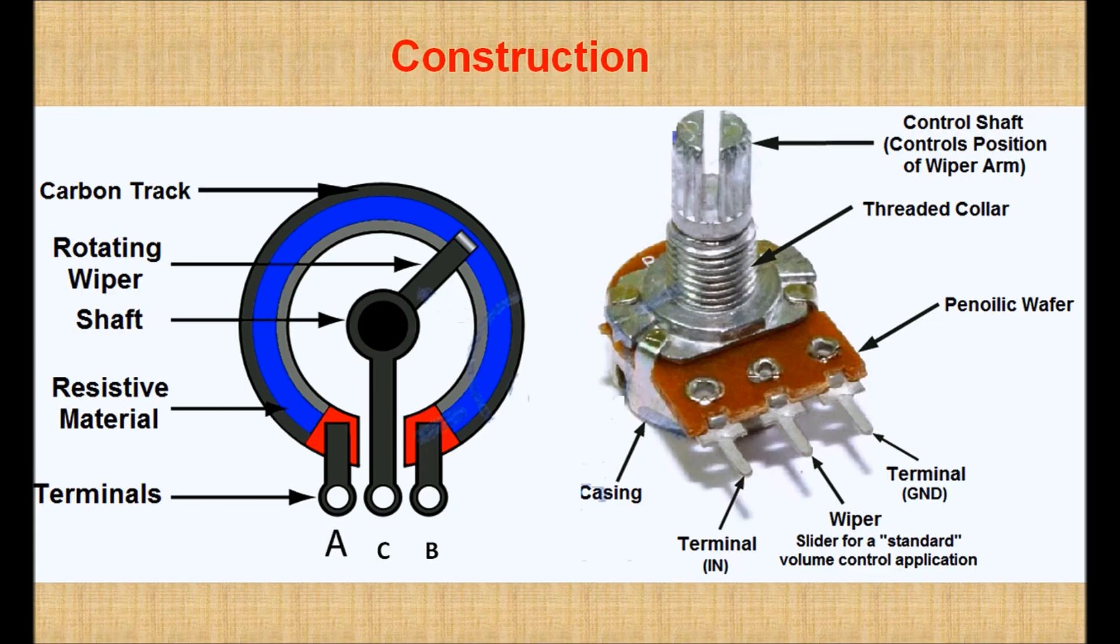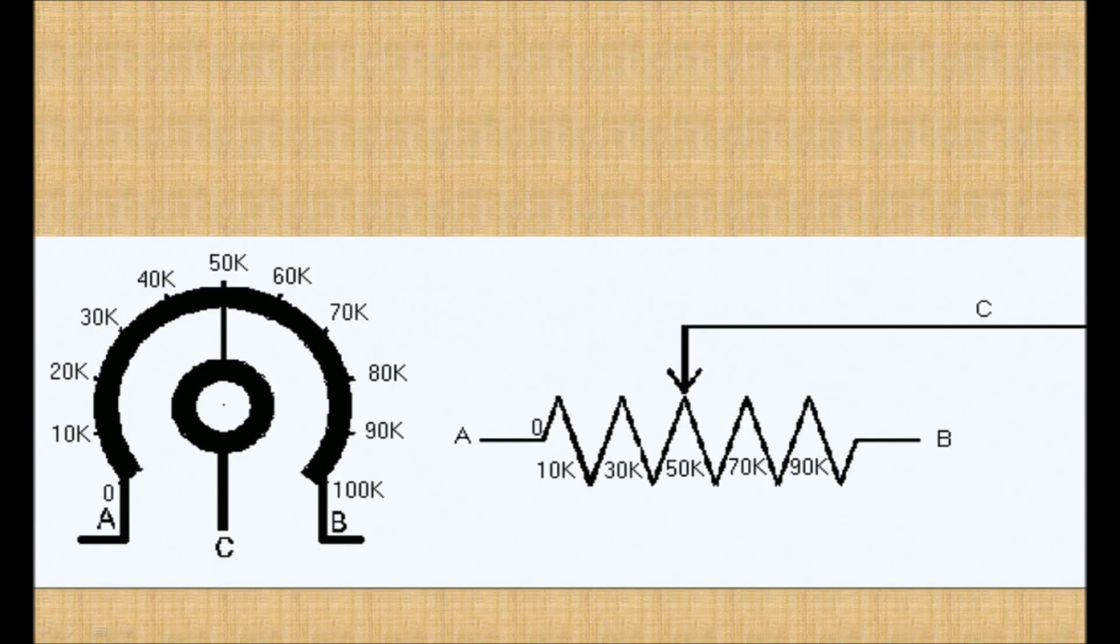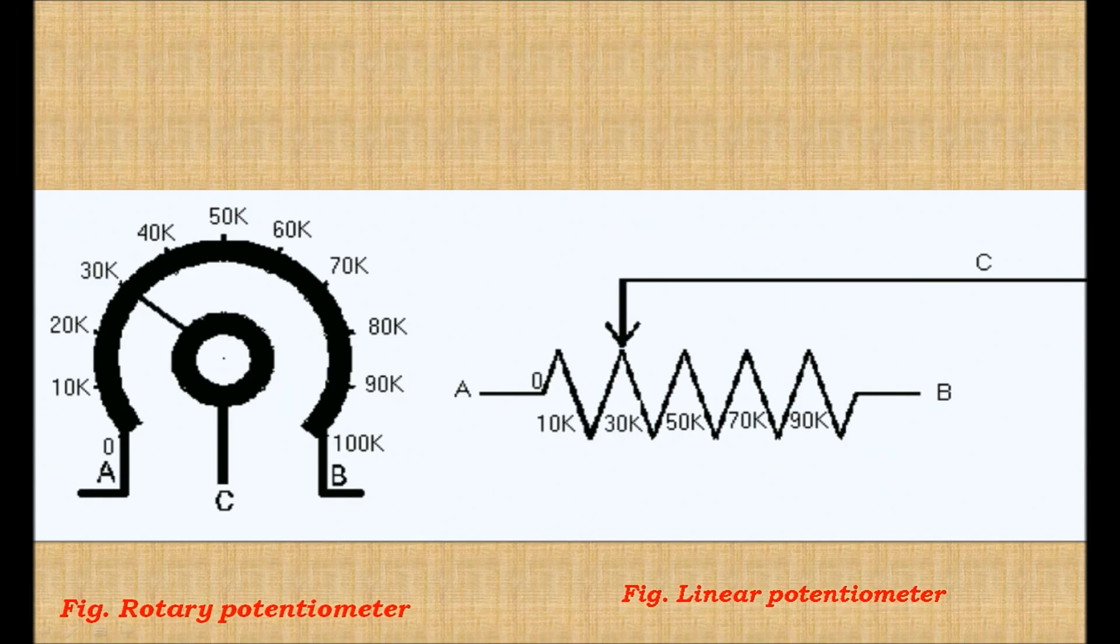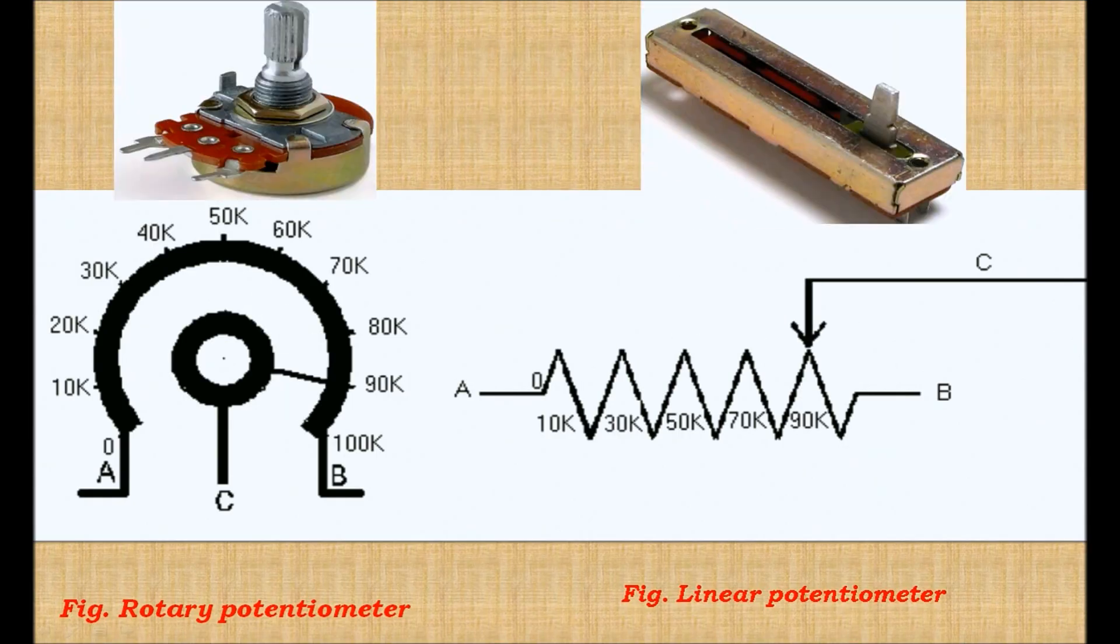Now see how potentiometers work. To measure the displacement of the body which is moving, it is connected to the sliding element of the potentiometer. As the body moves, the position of the slider on the potentiometer also changes. So the resistance between the fixed point and the slider changes. Due to this, the voltage VO across these points also changes.